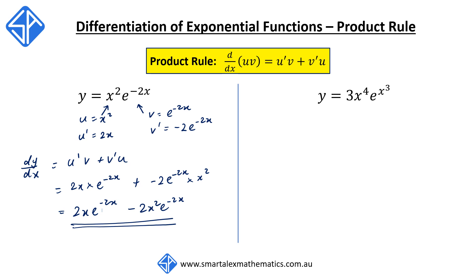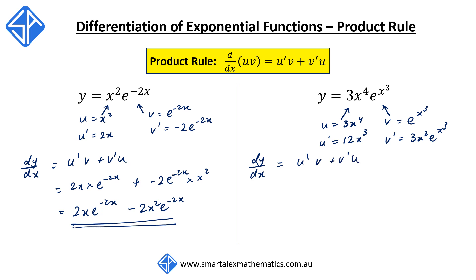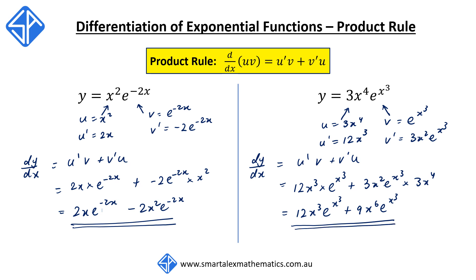Another example: y = 3x⁴·e^(x³). We let u = 3x⁴ so u' = 12x³, and v = e^(x³) so v' = 3x²·e^(x³). Applying the product rule, dy/dx = u'v + v'u = 12x³·e^(x³) + 3x²·e^(x³)·3x⁴, which simplifies to 12x³·e^(x³) + 9x⁶·e^(x³). This is our final expression for dy/dx.